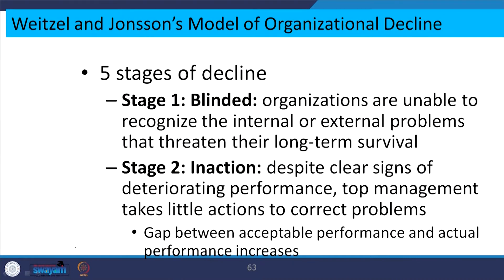There are 5 stages in the decline process: blindness, inaction, faulty action, crisis, and dissolution. In the blinded stage, organizations are not able to recognize internal or external problems. Inaction means that despite clear signs of deteriorating performance, top management takes little action and ignores the signals without taking any corrective action. Faulty actions occur when managers have made wrong decisions due to infighting within the top management team or group decision making failures, resulting in incorrect corrective decisions.